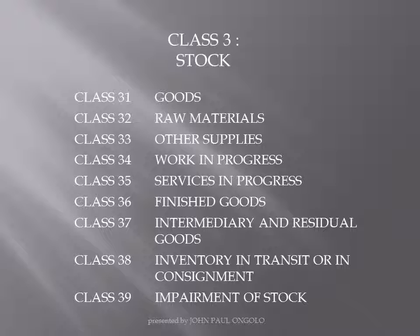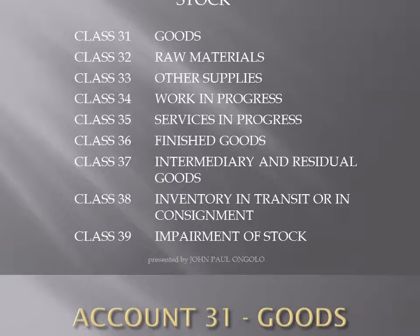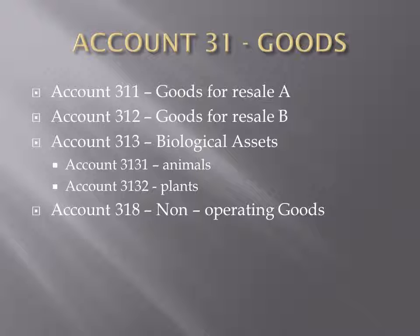Class 3.1 is subdivided into different sub accounts. We have account 3.1.1 and account 3.1.2, which deal with goods held for resale. Account 3.1.3 covers biological assets, which is further subdivided into animals and plants. Account 3.1.8 is used for non-operating goods — goods which are not included in the normal operating cycle of the entity.